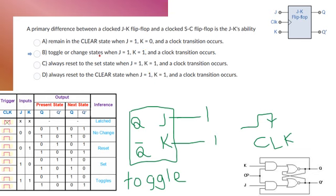And the only thing that is right is B. It's going to toggle and change states. Toggling meaning changing states when you have J=1 and K=1 on your clock.